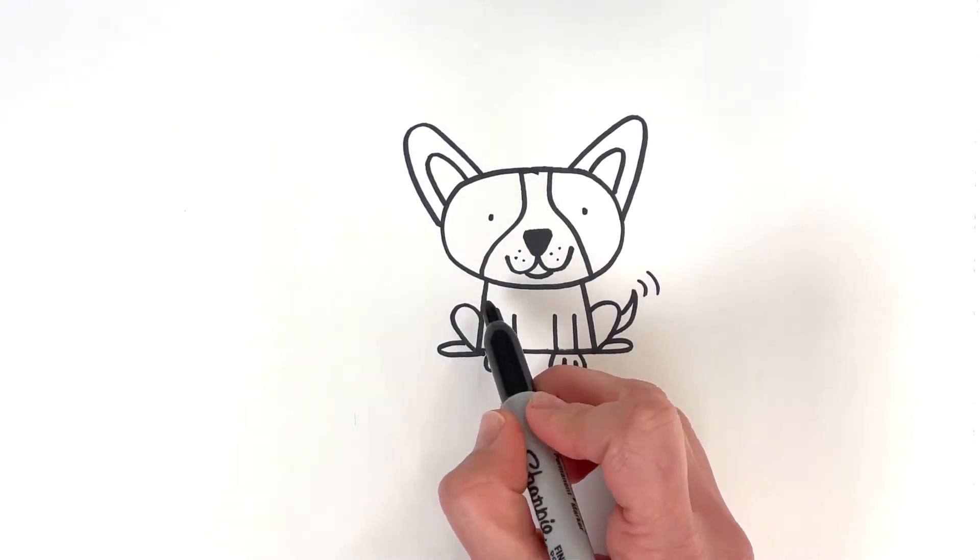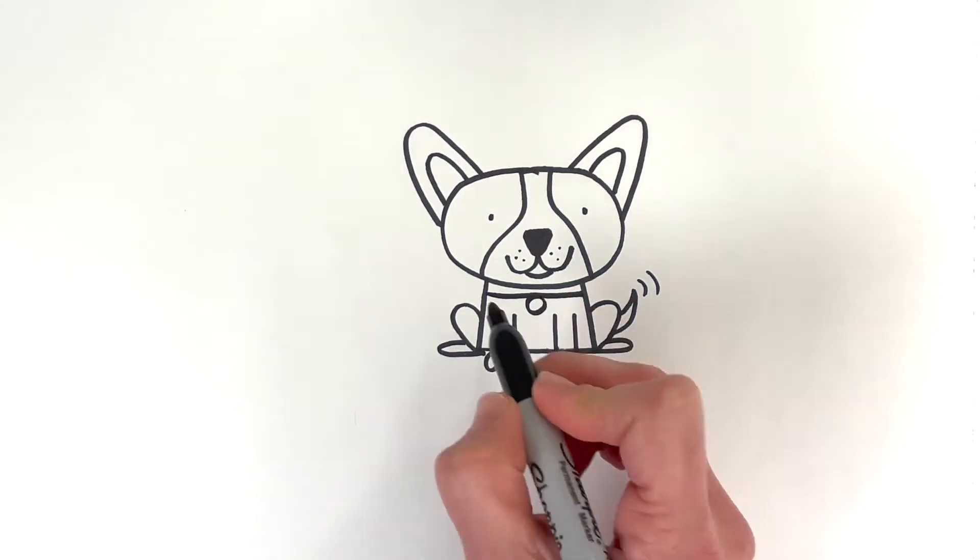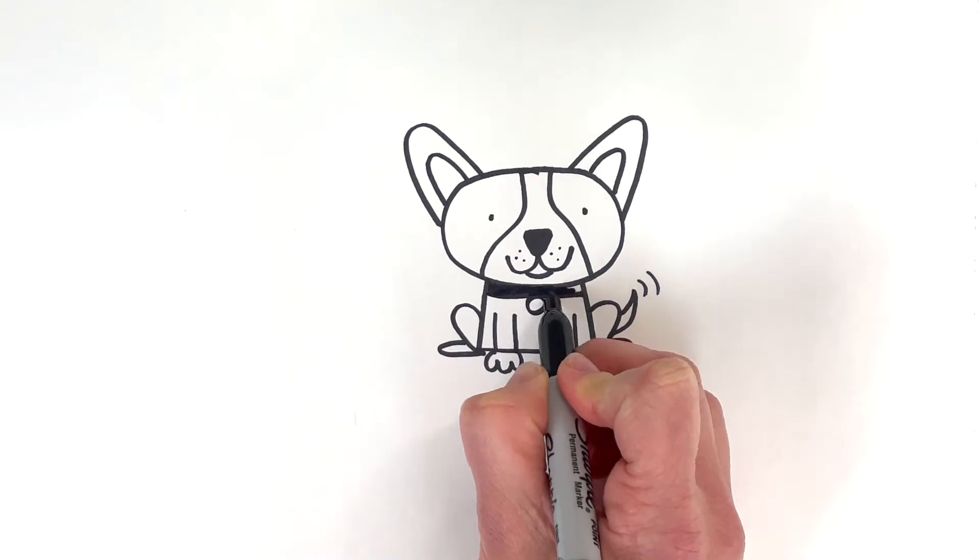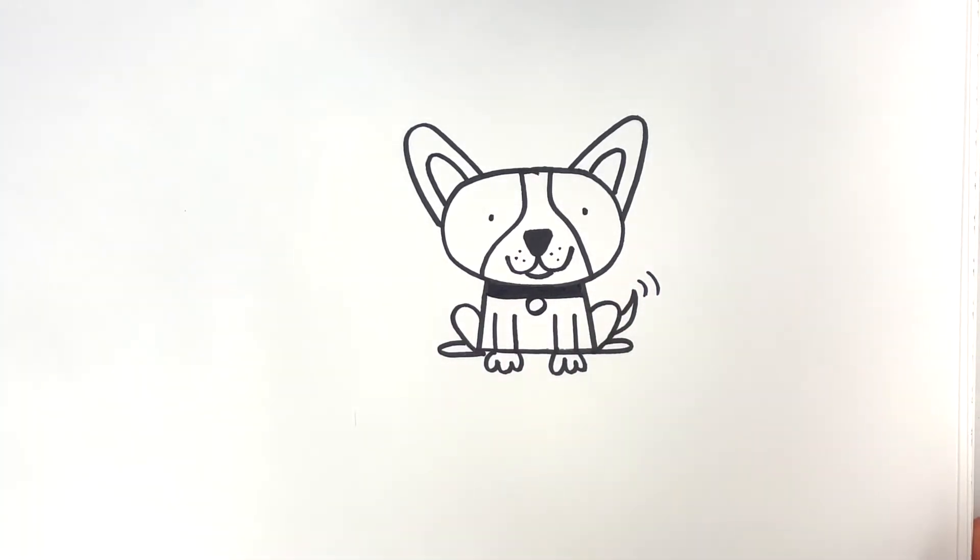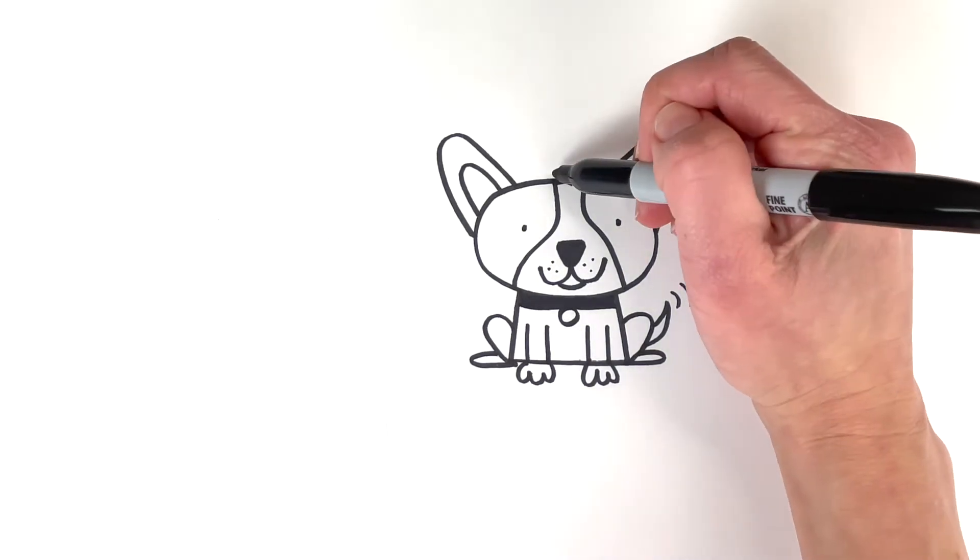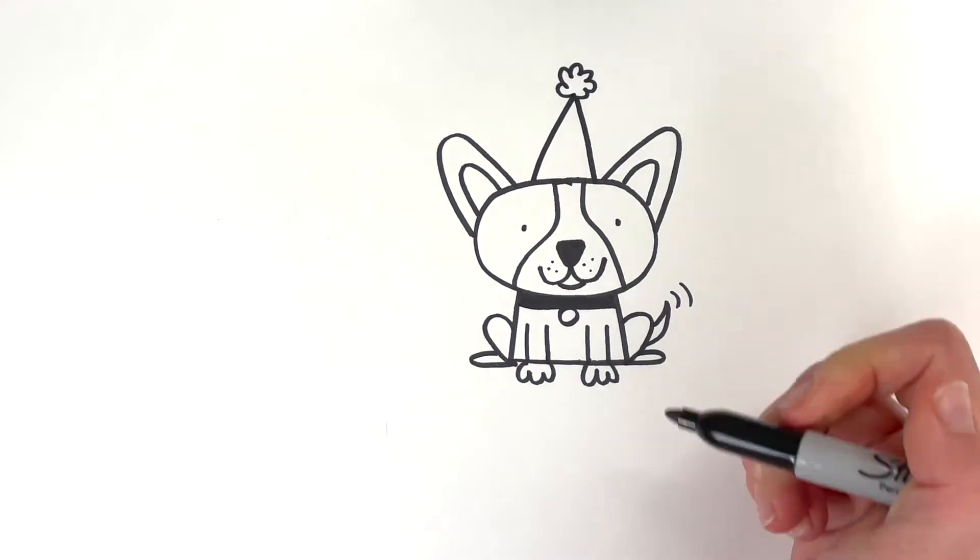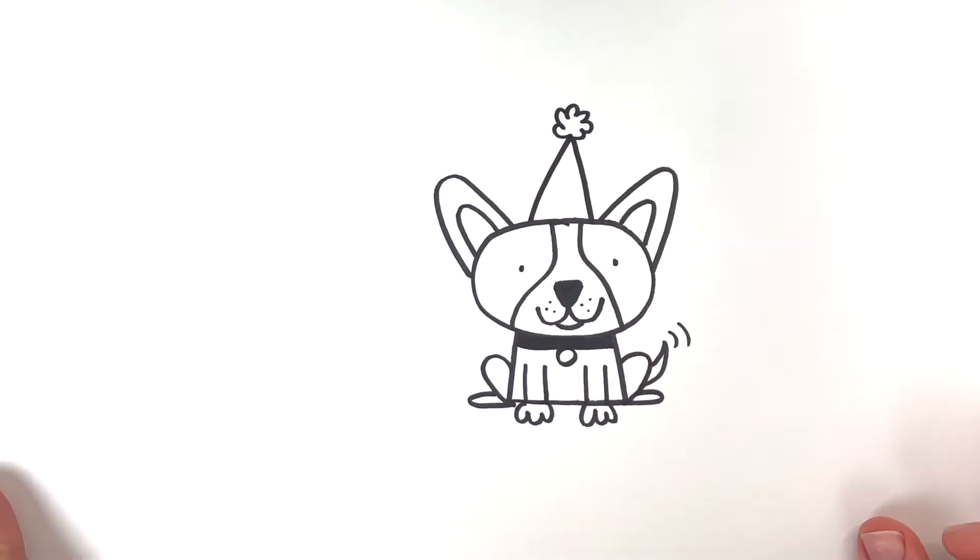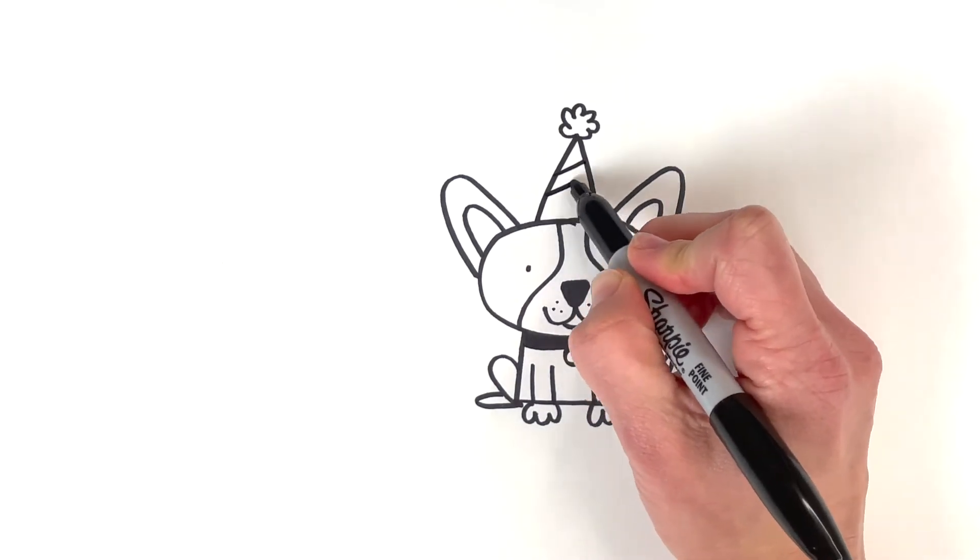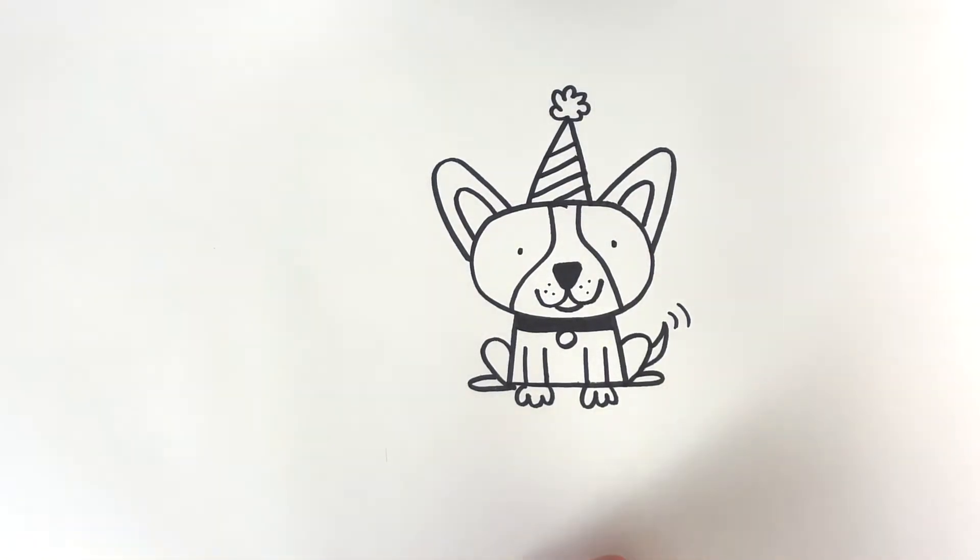And ooh, maybe I'll give my pup a little collar, a tag. And since he's coming to the party, I will have to give this little corgi a party hat with a pom-pom. And maybe you want to add a little pattern to your party hat. Do some little stripes. Cute! And I'm going to name this pup Piper.